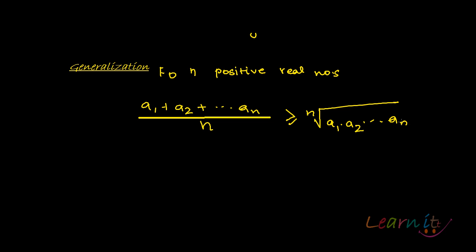We can generalize it for n numbers. So if you have n positive real numbers, for n positive real numbers, what will we have? We will have that arithmetic mean, which will be the sum upon total numbers, which is n, is always greater than or equal to the nth root of a1, a2, so on and so forth till an.